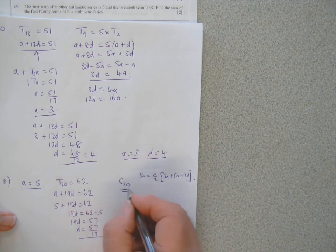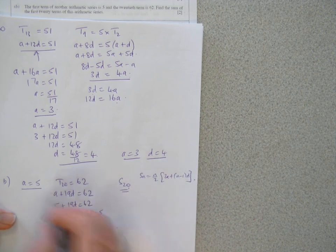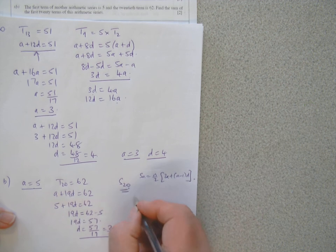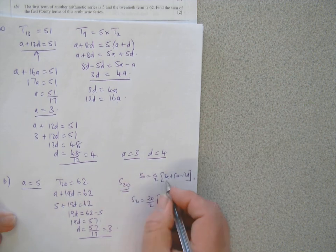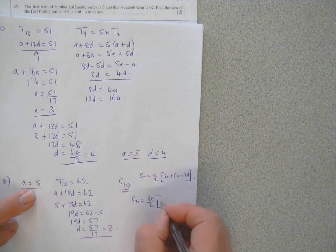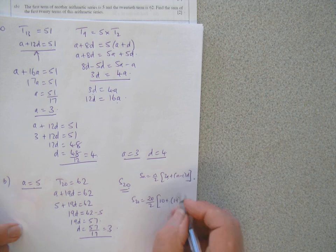Now I'm going to put in N equal to 20, D equal to 3, and A equal to 5 in that. So S20 would be 20 over 2, 2A, A is 5, so 2A is 10, plus N minus 1, so it's 20 take away 1 is 19, and D is 3.